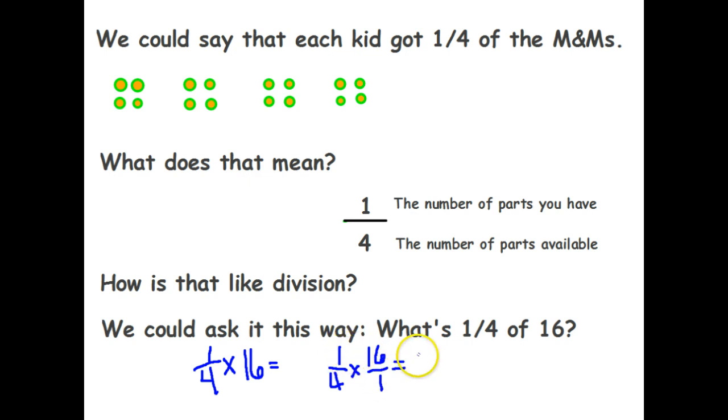So one times 16 is 16. And one times four is four. So this is 16 fourths, which is actually kind of a division problem. This says to take 16 and divide it by four. And 16 divided by four is, of course, four. Is one-fourth of 16 four? Well, sure. Here it is right here. I took 16 and divided it into four equal pieces, and you found that I got four in each one. One-fourth of 16 is four.